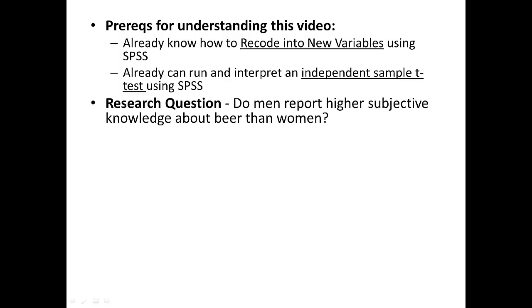The research question we're going to be studying to illustrate this example comparing regression and independent sample t-tests is the following: Do men report having higher subjective knowledge about beer than women? You should recognize that this is the type of question that you can study using an independent sample t-test because we have two independent groups, men and women, and we have a continuous variable of which we're going to take the mean of subjective knowledge about beer and compare those mean differences between the two groups.